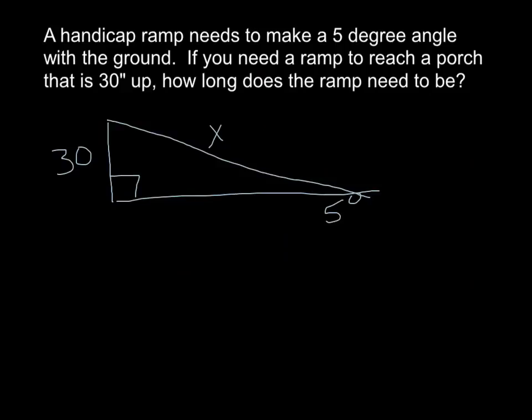Draw that as a right triangle. So we've got a 5 degree angle, we've got a 30 inch rise, and we want to know how long the ramp is. That would be the hypotenuse. So we've got opposite and hypotenuse, that means you use sine.